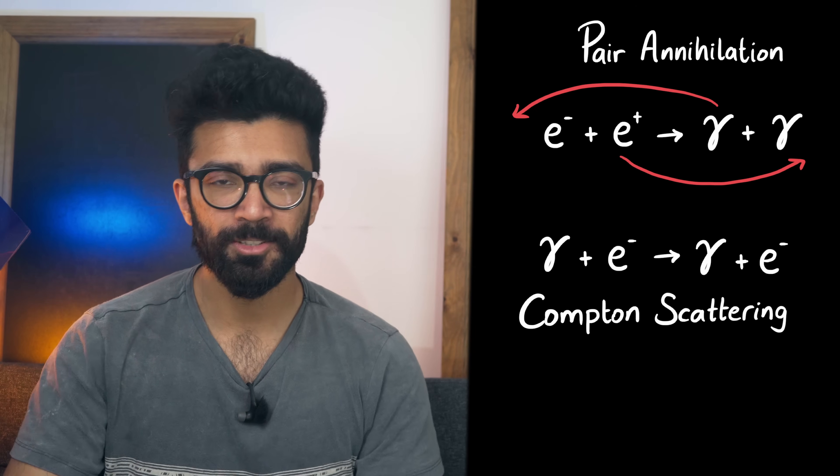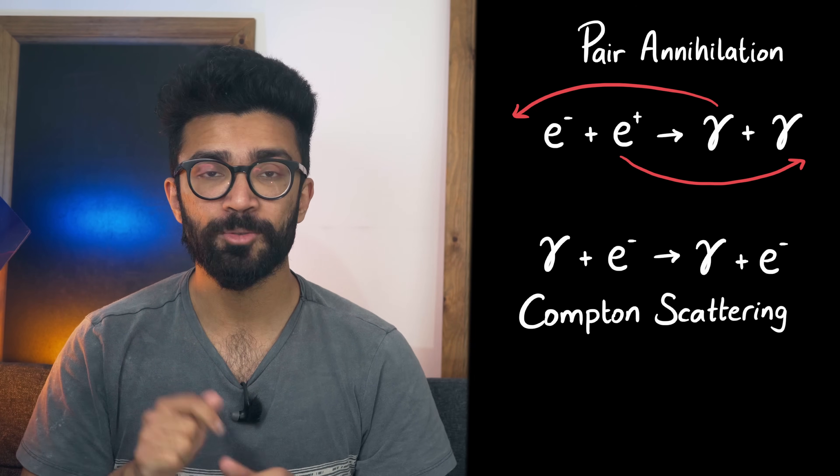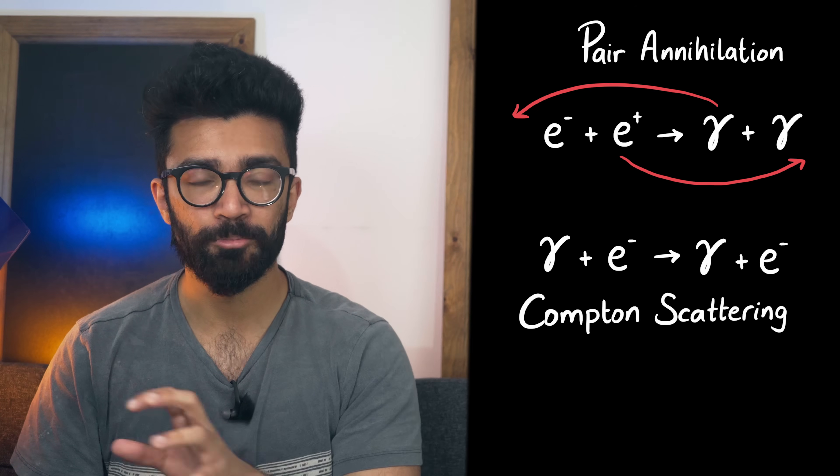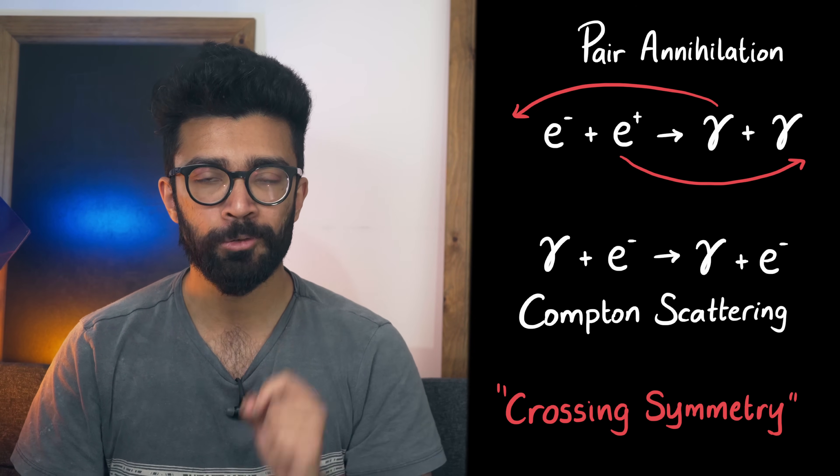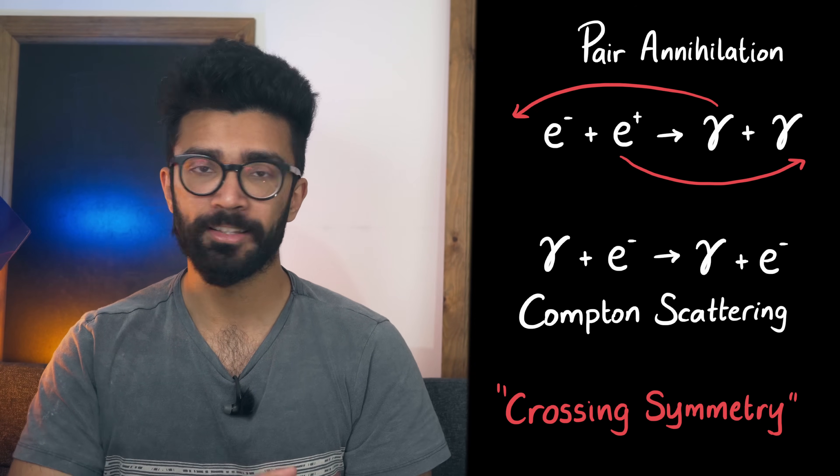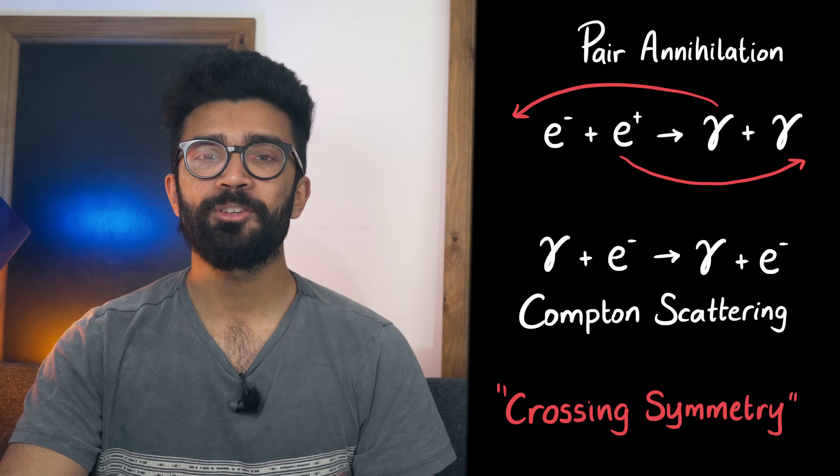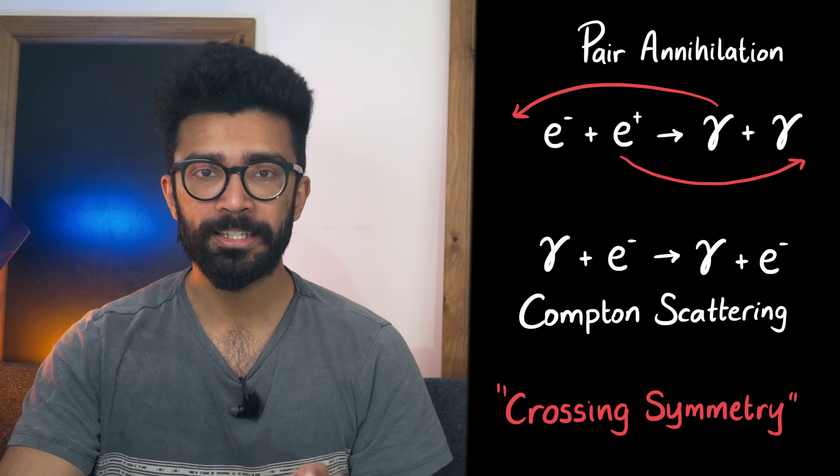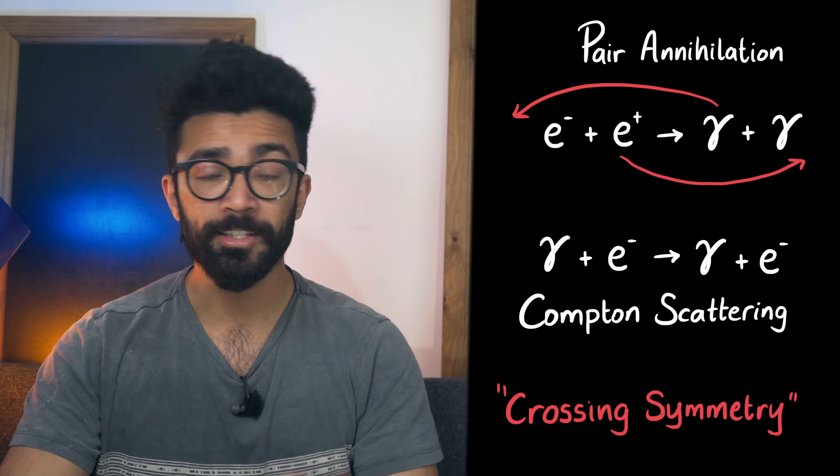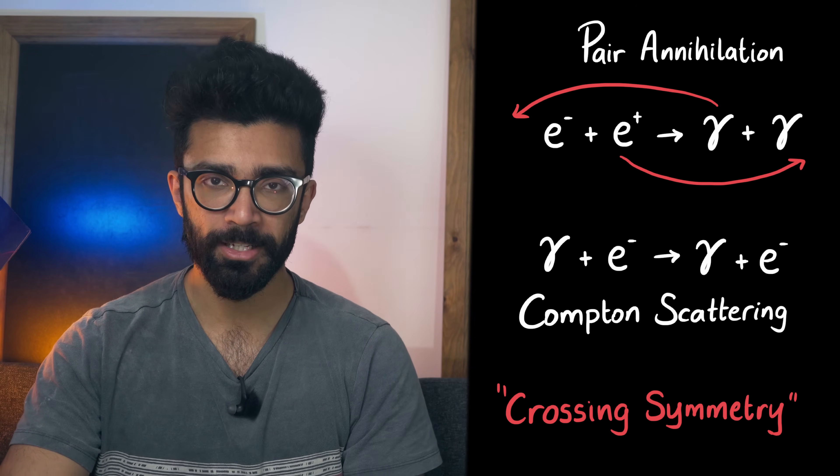This trick of moving particles to the other side of the equation while switching to their antiparticles in order to find another allowed process is known as crossing symmetry. There's obviously a much more mathematically rigorous explanation to this that we won't go into here. And it's also worth noting that we will only find a new allowed process assuming that the new process still obeys the conservation of mass energy and momentum.